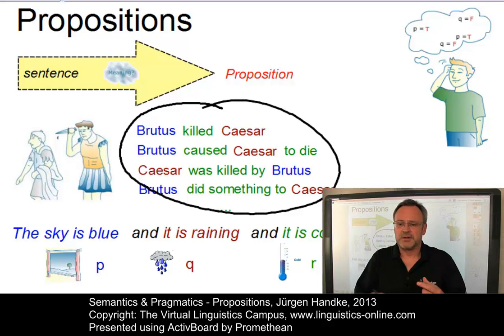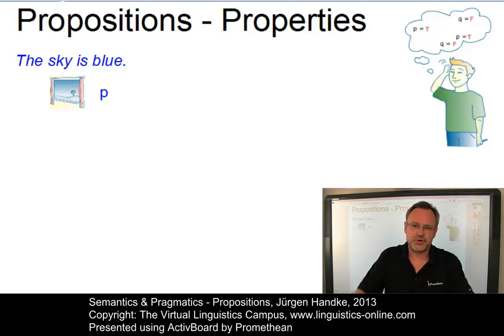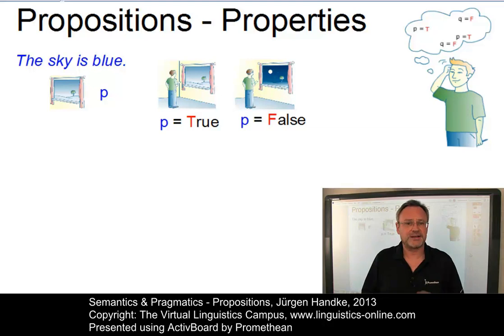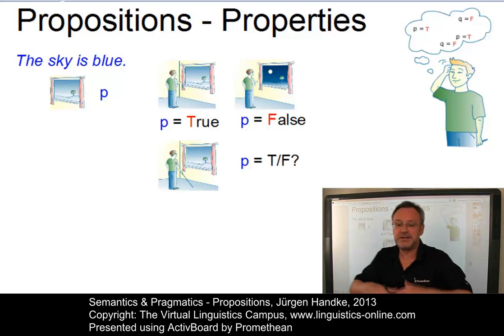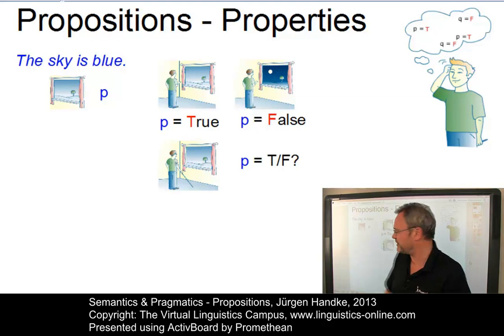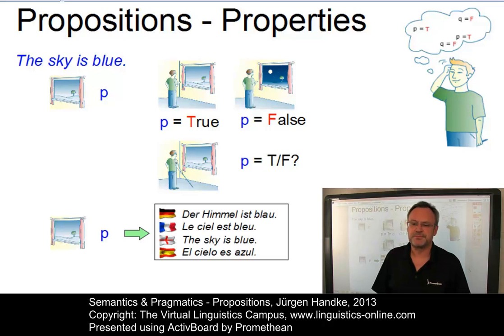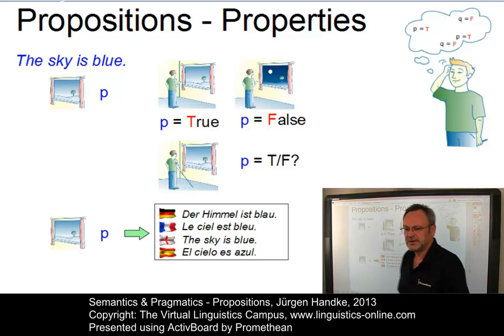The following properties are normally ascribed to propositions. First, propositions have a truth value — that is, they can be true (written as capital T) or false (denoted by capital F). Propositions may be known, believed, doubted, asserted, denied, or queried, so very often the truth value depends on a number of additional facts. And thirdly, propositions remain constant even when they are translated between languages — so proposition P is identical; only its translation into German, French, English, and Spanish is different.